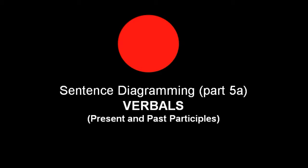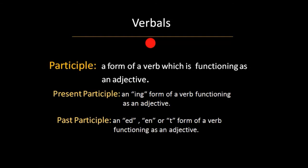This first video on verbals is going to concentrate on present and past participles. A participle is a form of a verb which is functioning as an adjective. Present participles are an -ing form of a verb functioning as an adjective, and past participles are -ed, -en, or -t forms of a verb functioning as an adjective — sometimes as adverbs.